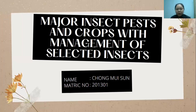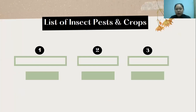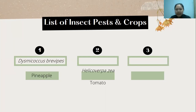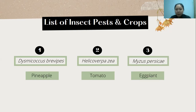Hello everyone. My topic for today's presentation is about the major insect pests in crops with management of selected insects. There will be three crops and three insect pests selected. The first is pineapple with Dysmicoccus brevipes, the second is tomato with Helicoverpa zea, and the third is eggplant with Myzus persicae.